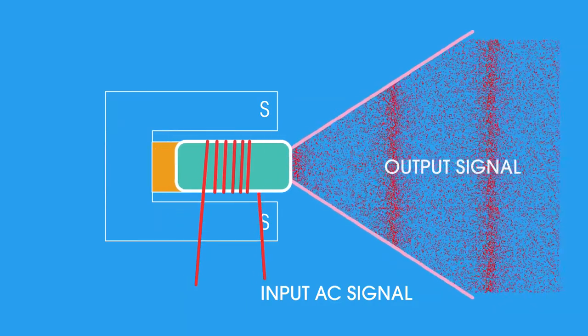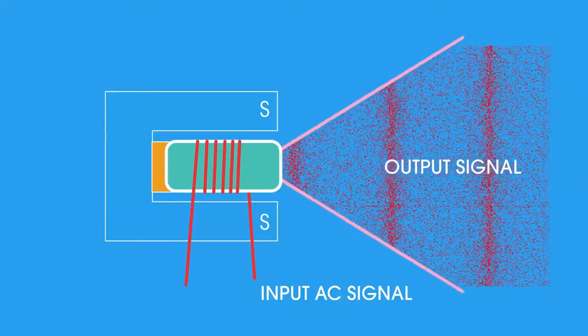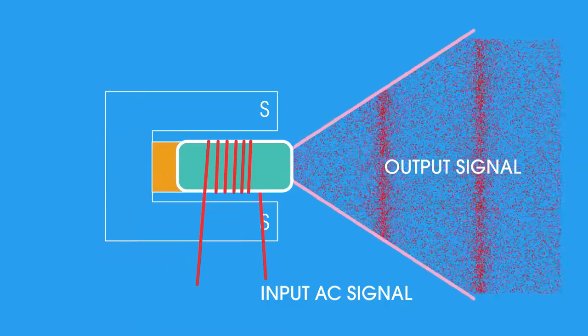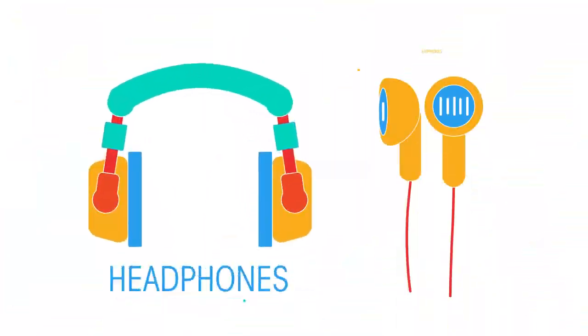The output frequency matches that of the input AC signal, and the loudness or volume depends on the magnitude of the voltage of that signal. Higher voltages cause a larger motor effect. Headphones or in-ear buds are just a small version of this design.